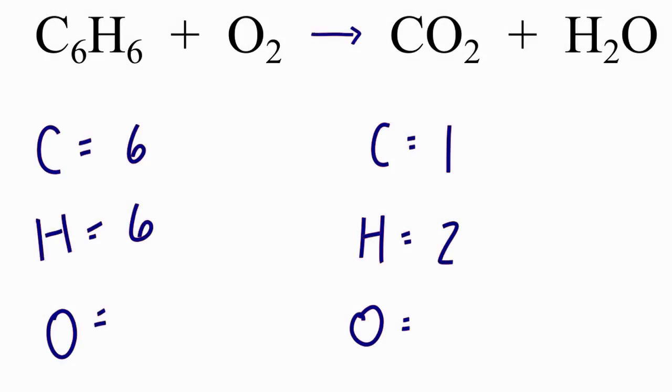So for this chemical equation, I've added everything up except the oxygens. I like to do those last. So here I have two oxygens, and over here I have two oxygens. But I need to also count this one here. So two plus the one, that'll give me a total of three oxygens on the product side.